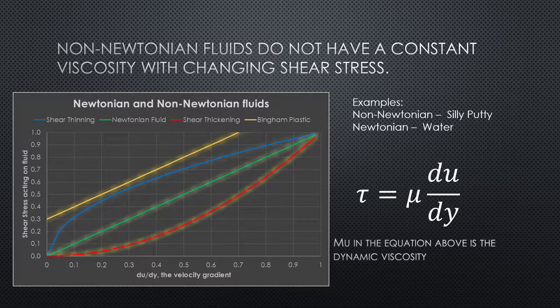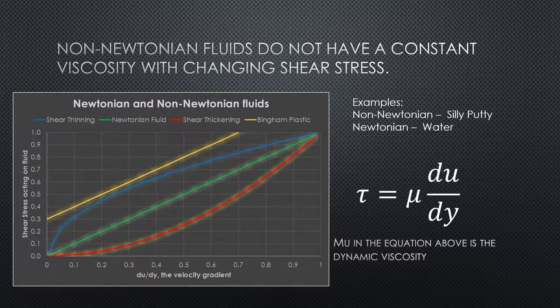And when that relationship is non-linear, you get a non-Newtonian relationship, or a non-Newtonian fluid. On the graph on the left, you can see some examples of non-Newtonian fluids, as well as, in green, an example of a Newtonian fluid.